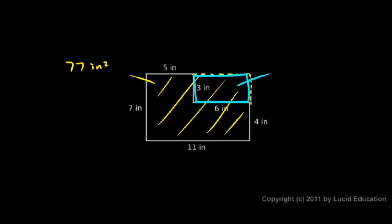I can see that that's three inches by six inches, so the area of this piece is three times six, which is eighteen, and that's eighteen square inches. So the total area will be seventy-seven square inches minus eighteen square inches, and that comes out to fifty-nine square inches, the same answer as we got when we did it the other two ways.